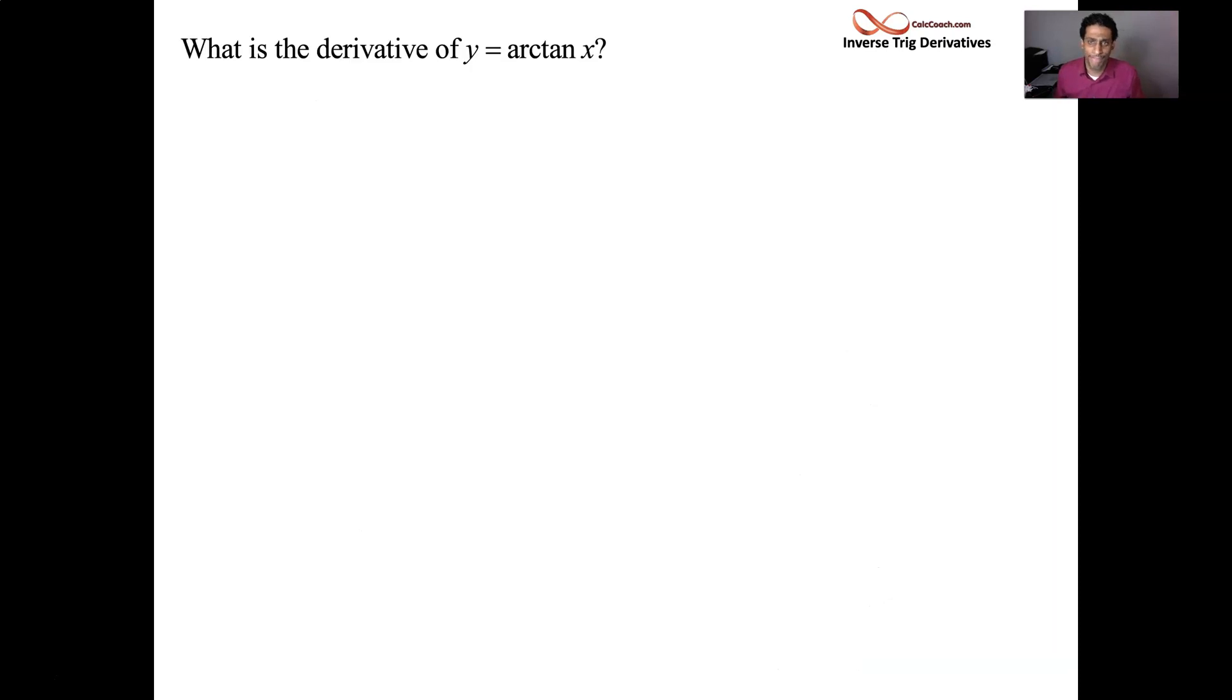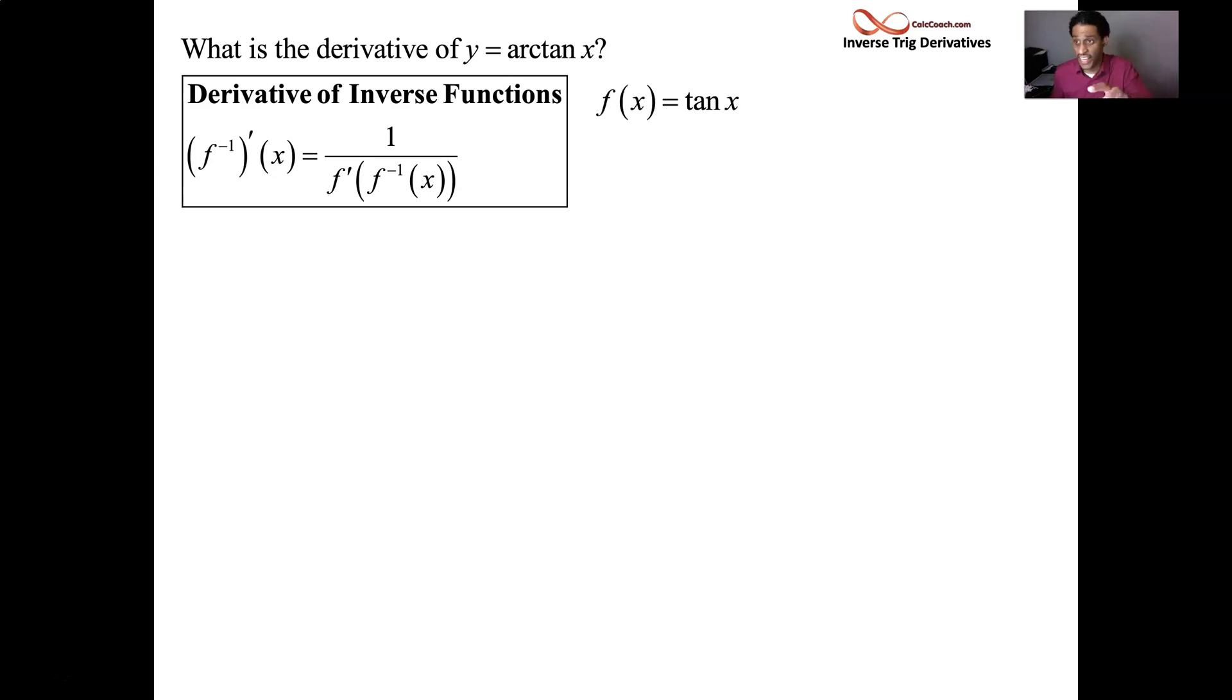What about its derivative? Like with the others, we employ the inverse function derivative theorem, which says, basically, if you know the original function, in this case tangent, and its derivative, secant squared, then you can find the inverse function's derivative. You do 1 over the original function's derivative, but not at x, at the inverse function. So it'll be 1 over secant squared, not of x, but of arctan of x. That's the derivative.